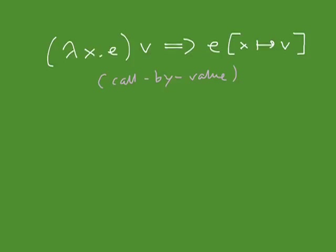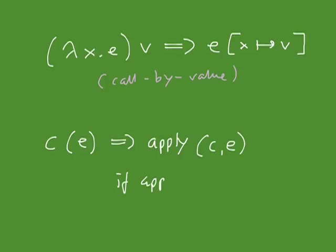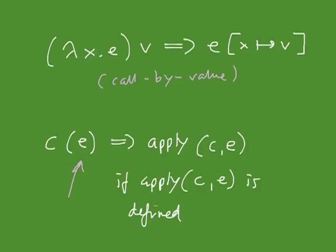There's also a rule for constants: if you have a constant applied to an expression, that evolves to the result of applying the apply function to c and e. This is only defined if the apply function is actually defined for that c and e. For the constants, we're not assuming call-by-value — the argument can be an arbitrary expression. Those are the rules for function application in the simply typed lambda calculus.